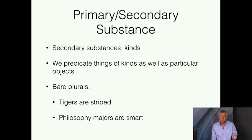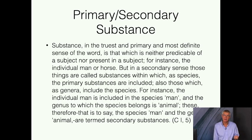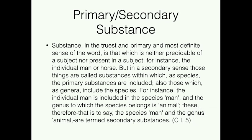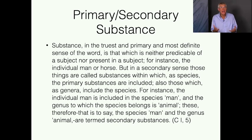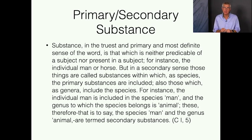Kinds are substances in a secondary sense. Aristotle describes it this way: substance, in the truest and primary and most definite sense, is that which is neither predicable of a subject nor present in a subject — for instance, the individual man or horse. But in a secondary sense, those things are called substances within which, as species, the primary substances are included, also those which, as genera, include the species. For instance, the individual man is included in the species man, and the genus to which the species belongs is animal. Therefore, the species man and the genus animal are termed secondary substances.